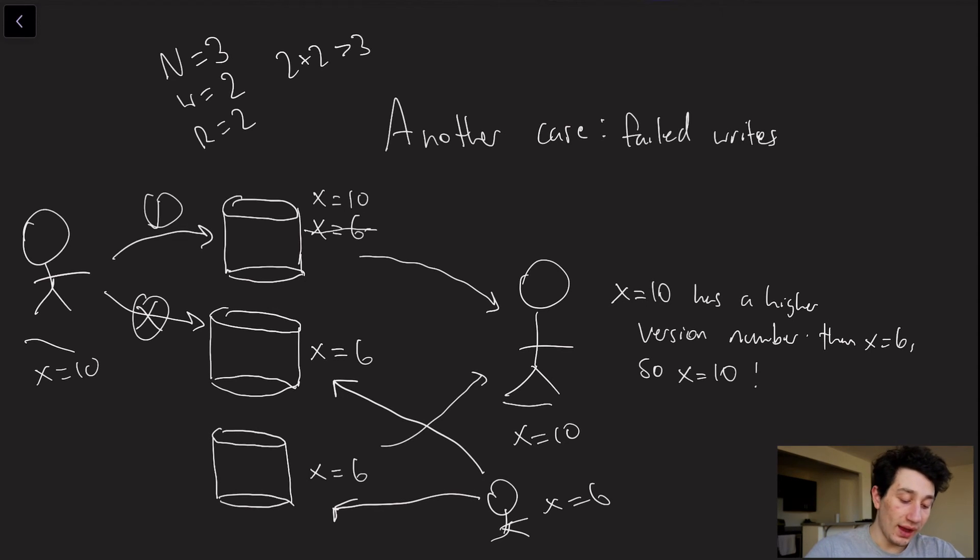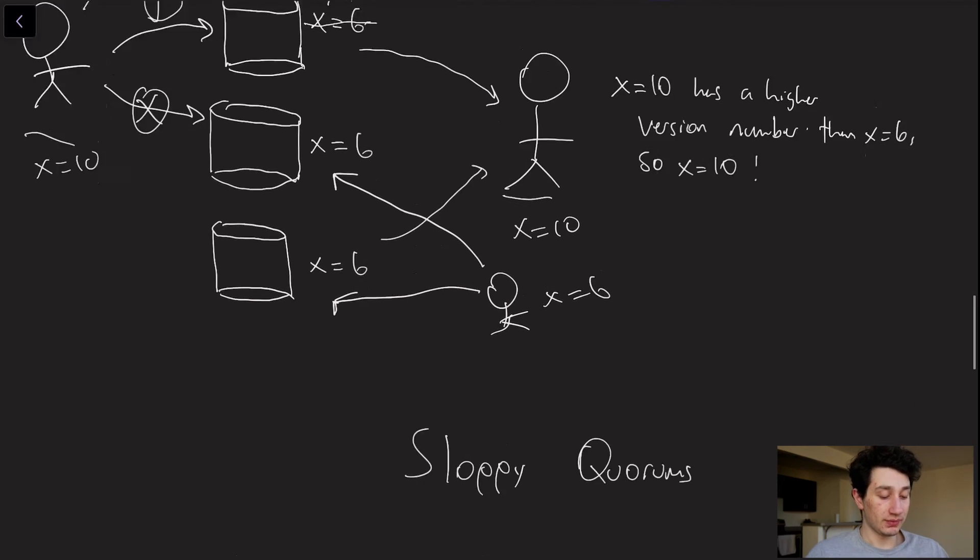Hence, our quorums are not strongly consistent. If there were a way somehow for us to roll back this write and say, okay, well, it didn't succeed everywhere, so X clearly is not equal to 10, then of course we would be strongly consistent. But that problem and ability to be able to roll back is not guaranteed. It would require this guy sending another network request to the top database node, which is not guaranteed to get there. It could fail, too.